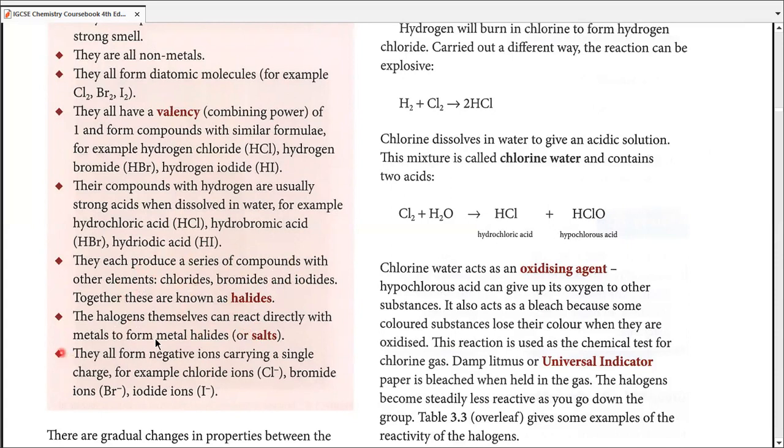If the elements are composed of Cl, they're known as chlorides. If Br, bromides. If I, iodides. Together, we can call the entire group halides. The halogens can react directly with metals to form metal halides. Metal halides are what we commonly call salts, and salts are made from metal positive parts and halides, negative parts. They can all form negative ions by easily carrying a single electron as a single charge. Fluorine becomes chloride ions, bromine becomes bromide ions, and iodine becomes iodide ions.